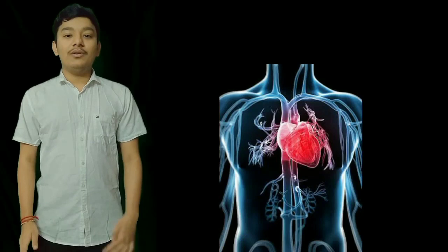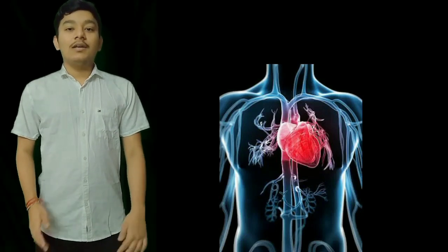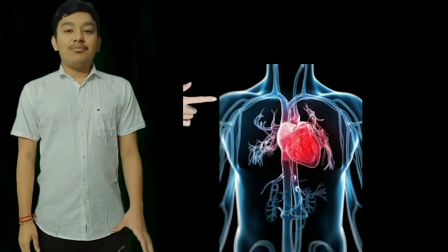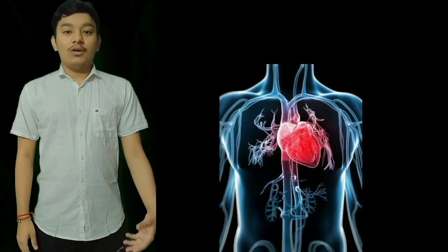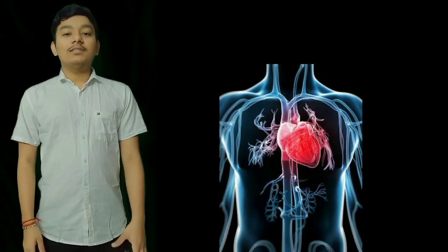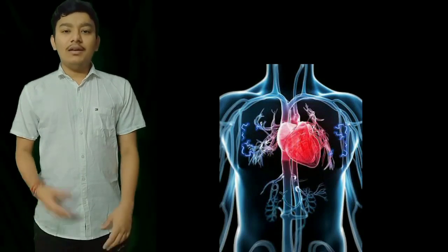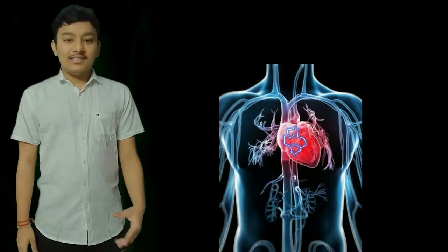The location of your heart: your heart is located between your lungs in the middle of your chest, behind and slightly left to the breast bone. The heart is surrounded by a double-layered membrane called the pericardium, which is basically like a sack.